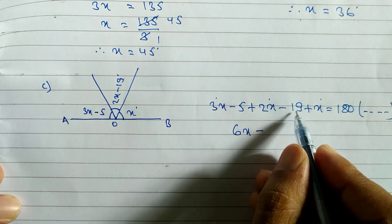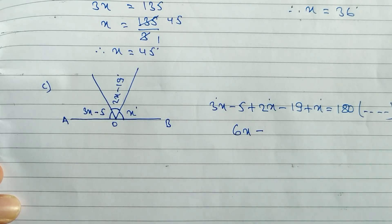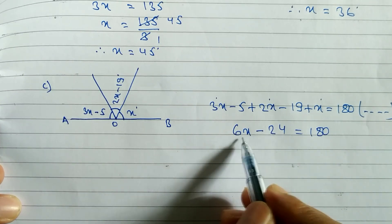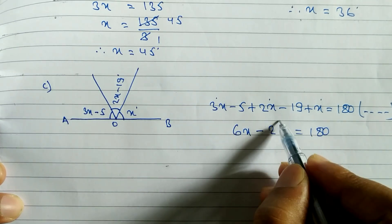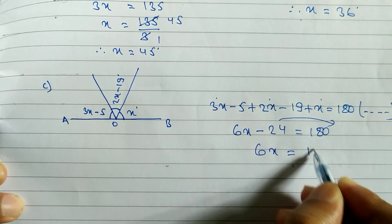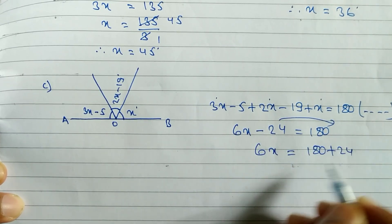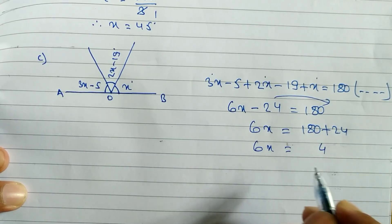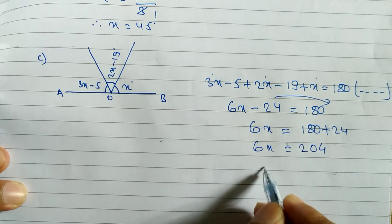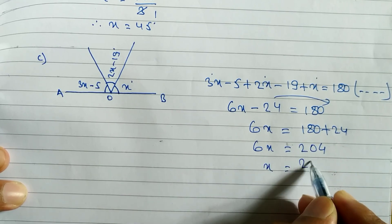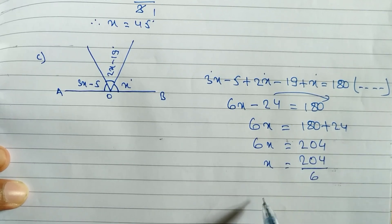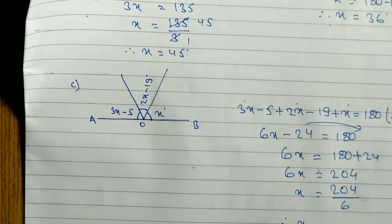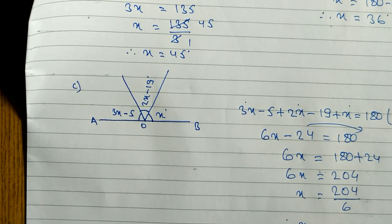For the constants: minus 5 minus 19 — since both are negative we add them — giving minus 24. So 6x minus 24 is equal to 180. Taking 24 to the right side: 6x is equal to 180 plus 24, which equals 204. Therefore x is equal to 204 divided by 6, and when we divide we get x equal to 34 degrees.